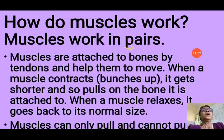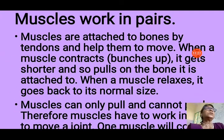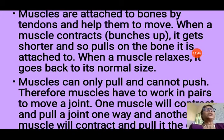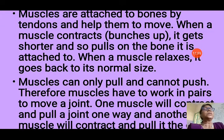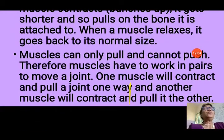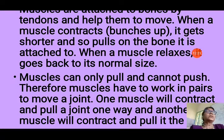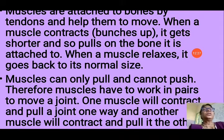How do muscles work? Muscles work in pairs — if one muscle contracts, the other muscle relaxes. Muscles are attached to the bones by tendons and help them to move. When a muscle contracts, it gets shorter and pulls on the bone it is attached to. When a muscle relaxes, it goes back to its normal size. Muscles can only pull and cannot push. Therefore, muscles have to work in pairs to move a joint — one muscle contracts and pulls the joint one way, while the other muscle contracts and pulls it in the opposite direction.